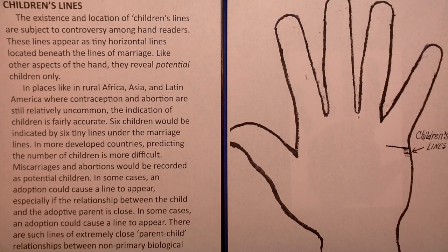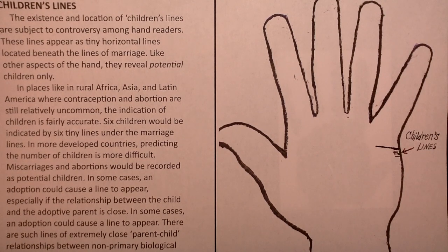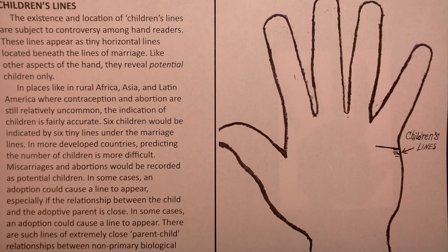In more developed countries, predicting the number of children is more difficult. Miscarriages and abortions would be recorded as potential children. So if there was a child — whether it was weeks or a couple of months or whatever length of time was involved — that line is going to start to appear. In some cases, an adoption could cause a line to appear, especially if the relationship between the child and the adoptive parent is close. That's very important.